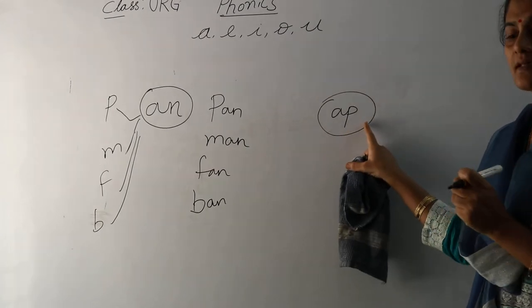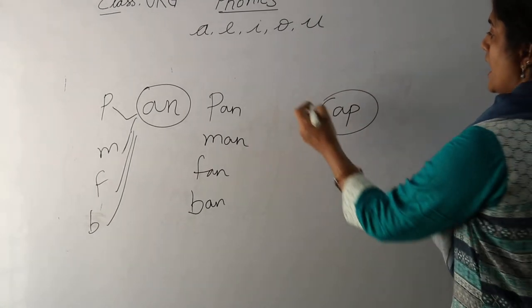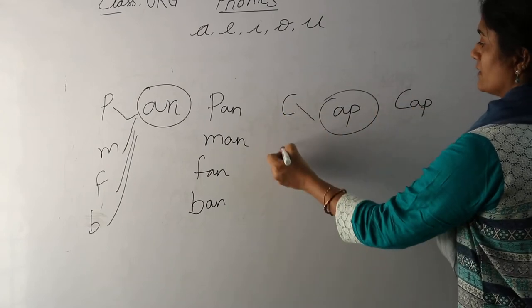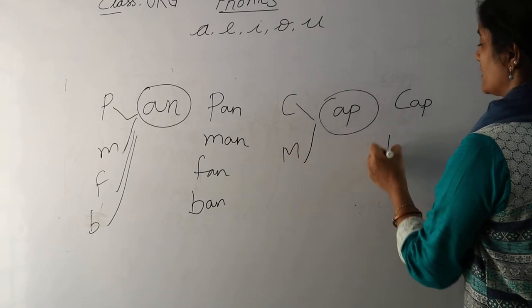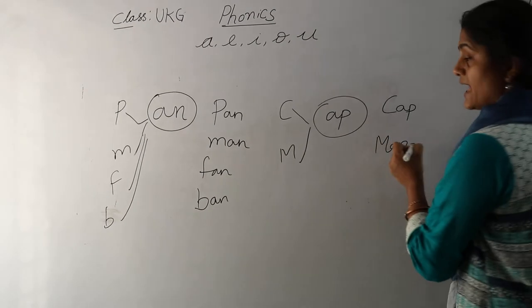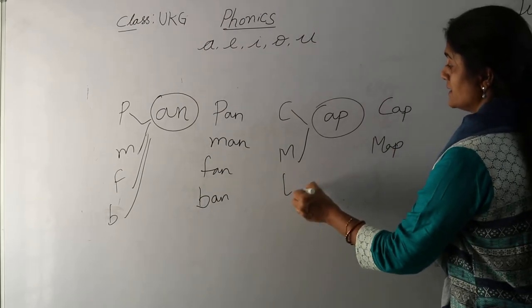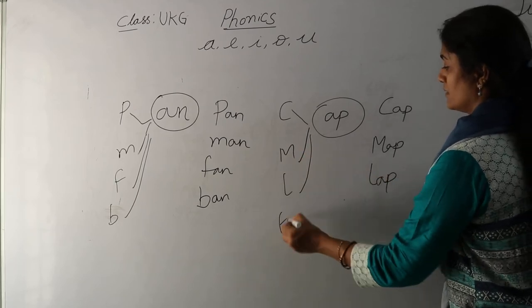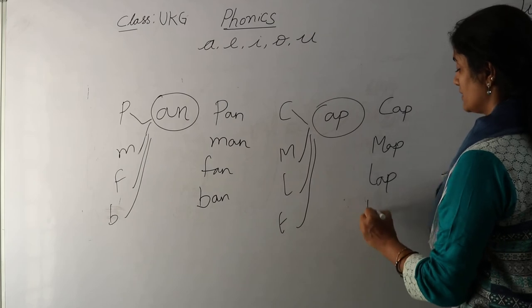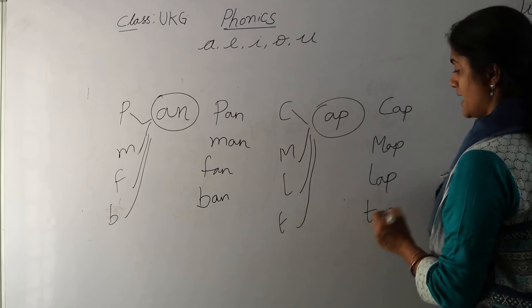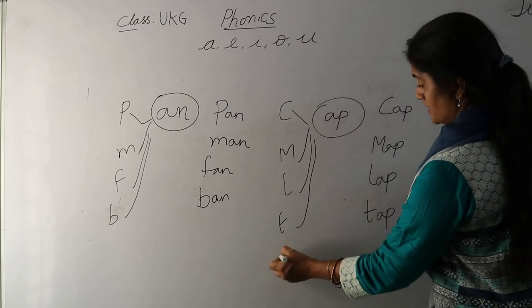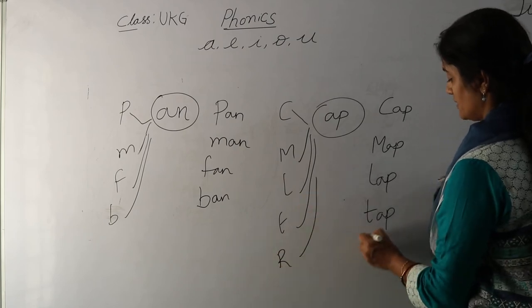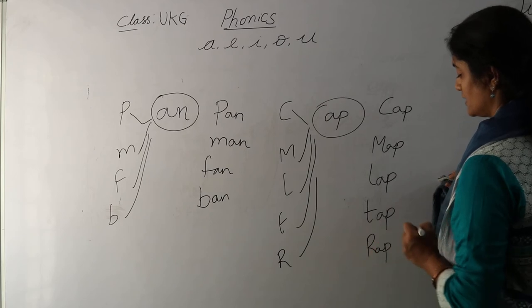What do you see here? A-B means ab. As in C-ab, cab. L-ab, lab. T-ab, tab. And R-ab, rab. Very good.